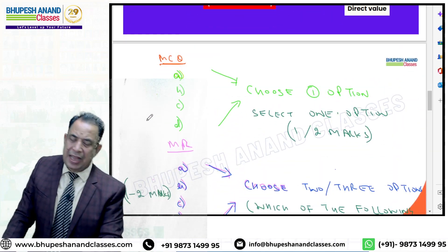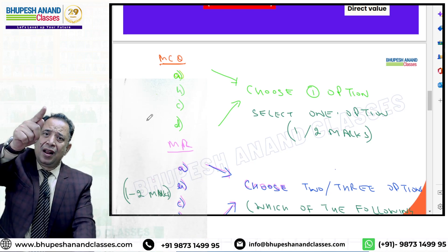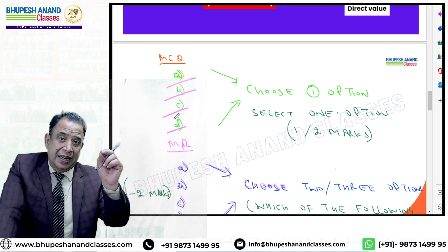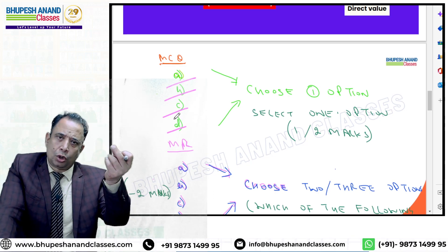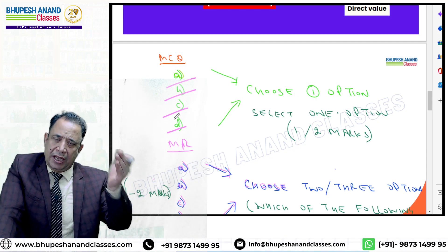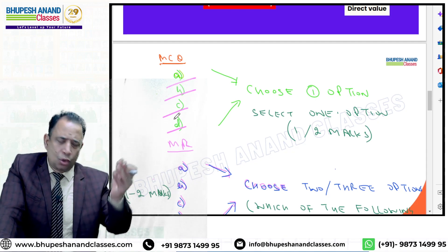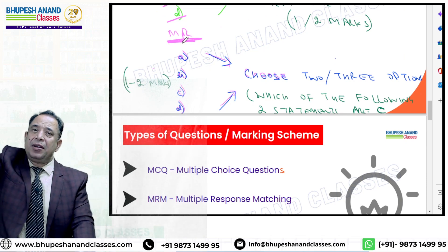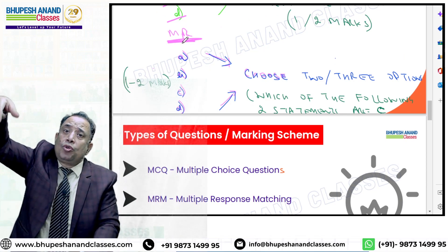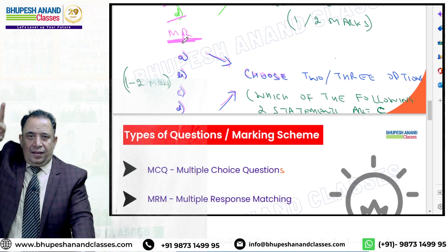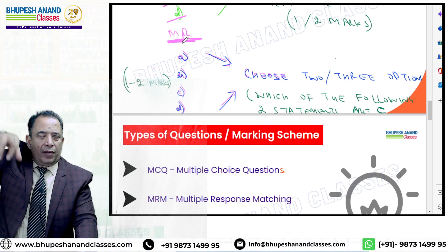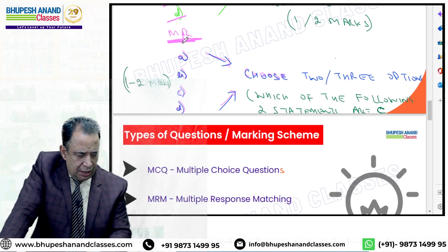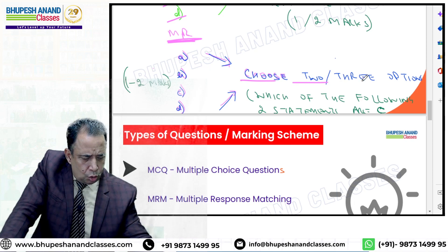MCQs बड़े simple हैं - आपको एक question दिया होगा, फिर पूछा जाएगा कौन सी option ठीक है। चारों या तीनों में से एक ही option बतानी है। True or false होगा तो दो options होंगी, otherwise three or four options हो सकती हैं। Multiple response में question दिया होगा, उसके दो responses हो सकते हैं - 'which following two statements are correct?' - तो आपको two options select करनी हैं।